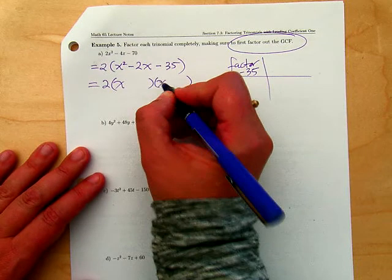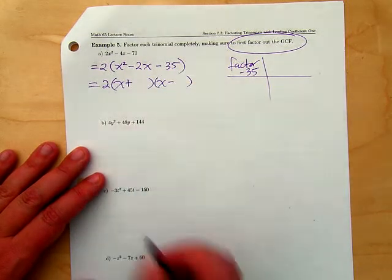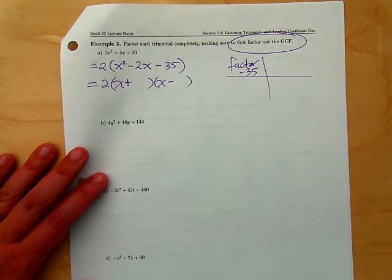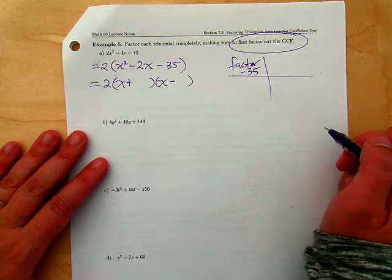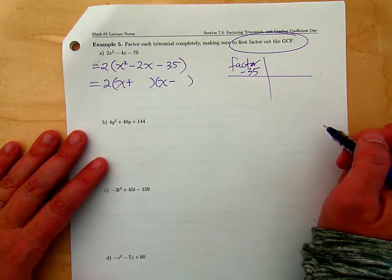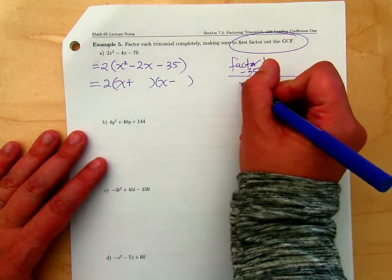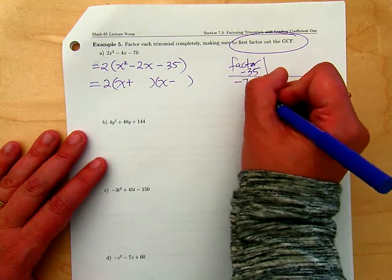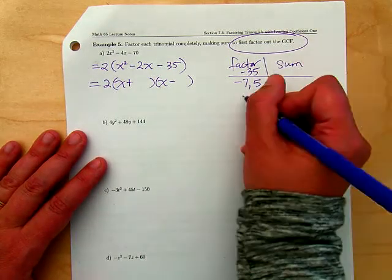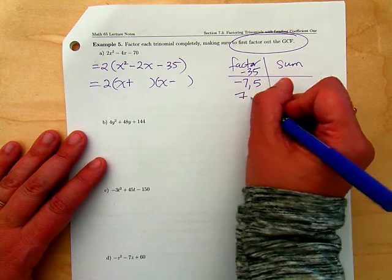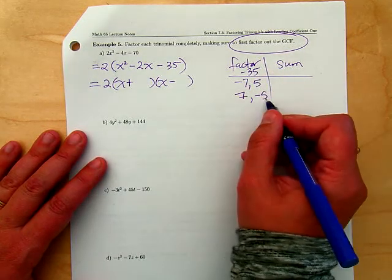We want to factor negative 35, and that already tells you something about the signs. If it's a negative, the signs have to be opposite. Give me some numbers that multiply together to give you negative 35.